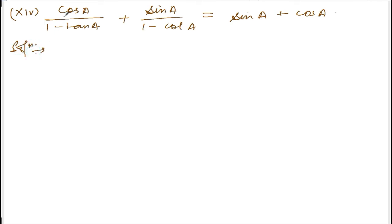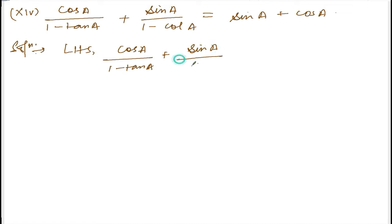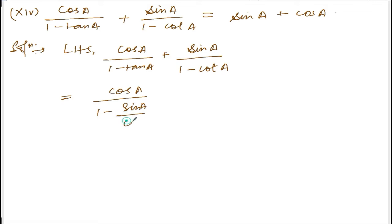Taking the left hand side: cos(a) divided by 1 minus tan(a), plus sin(a) divided by 1 minus cot(a). I can write tan(a) as sin(a)/cos(a), and cot(a) as cos(a)/sin(a), converting everything into sin and cos.